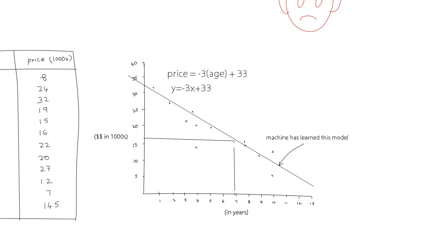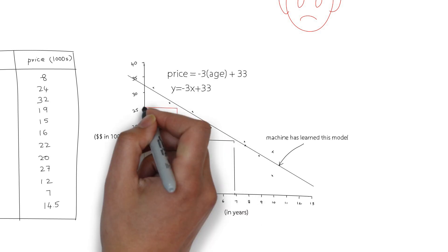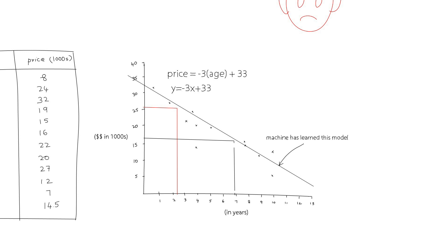If I can program a computer to read these data points and come up with an equation, then given any value of x, which is the age of the car, the computer can come up with the price. Essentially, it has learned from this data.